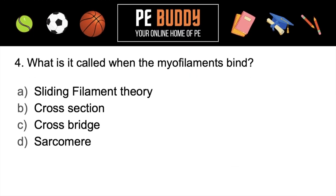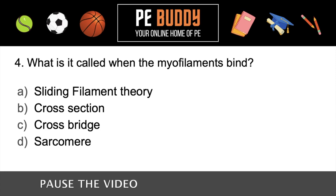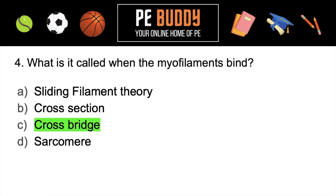Question number four: what is it called when the myofilaments bind? Is it sliding filament theory, cross-section, cross-bridge, or sarcomere? The correct answer is cross-bridge.